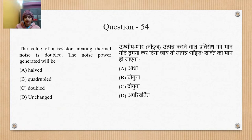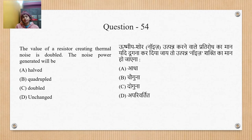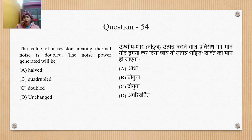Question 54: The value of a resistor creating thermal noise is doubled — the noise power generated will be half, quadruple, doubled, or unchanged? Noise power depends on bandwidth and temperature, not on the resistor value itself. So option D — unchanged — is the correct answer.